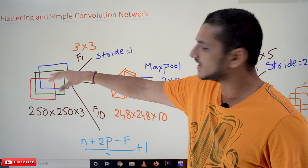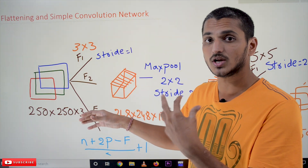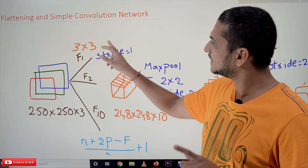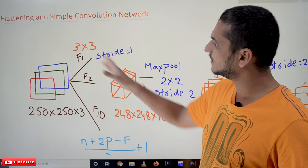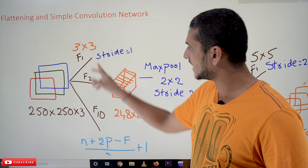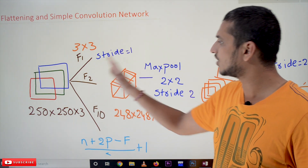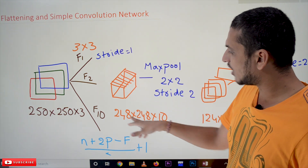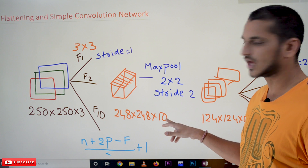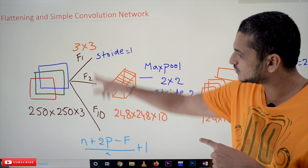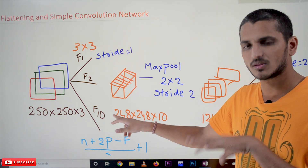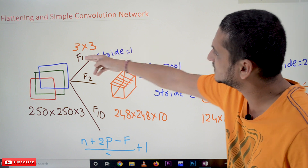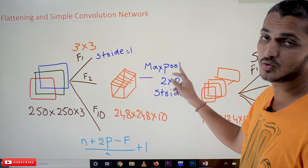This input is given to the first convolution layer. In the first convolution layer we are using a filter of size 3 by 3 by 3 — where 3 means the number of channels, and 3 by 3 is the height and width. We are using 10 filters here. The output we got from this convolution layer is 248 by 248 by 10 — 10 channels because we have 10 filters. These are basics discussed previously. Each channel from F1, F2, through F10 is given as input to the max pool layer.